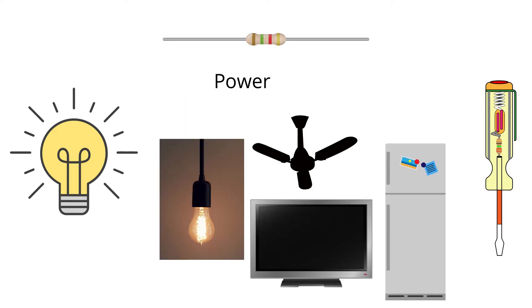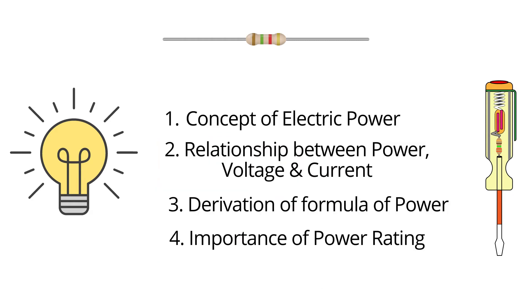So like this bulb, different electrical appliances have different power ratings, which helps in bringing out smooth and efficient operation for the appliances. So I hope that you now understand the concept of electric power and also the relationship between power, voltage, and current.